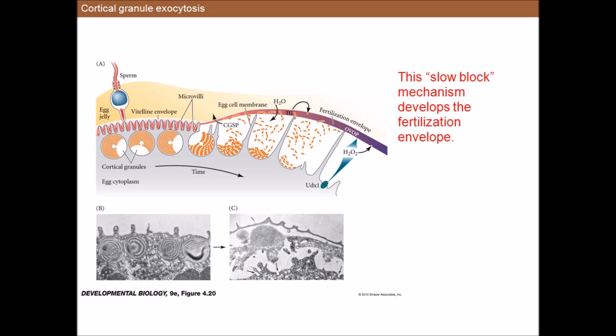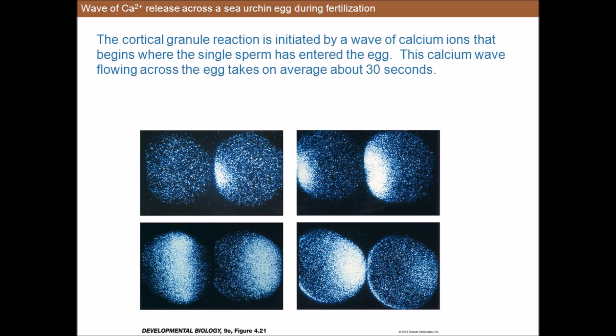The mechanism of cortical granule exocytosis is similar to that of the exocytosis of the acrosome, and it may involve many of the same molecules. Upon fertilization, the concentration of free Ca²⁺ in the egg cytoplasm increases greatly. In this high calcium environment, the cortical granule membranes fuse with the egg cell membrane, releasing their contents. Once the fusion of the cortical granules begins near the point of sperm entry, a wave of cortical granule exocytosis propagates around the cortex to the opposite side of the egg.